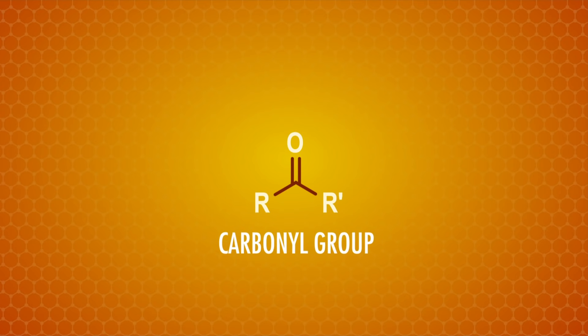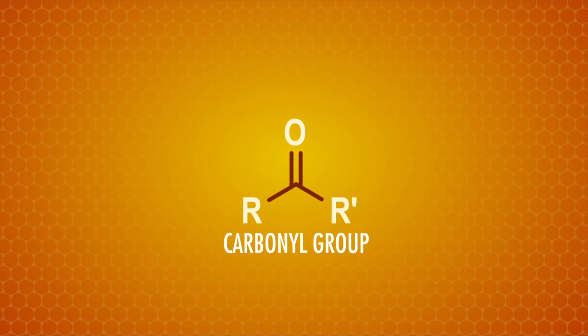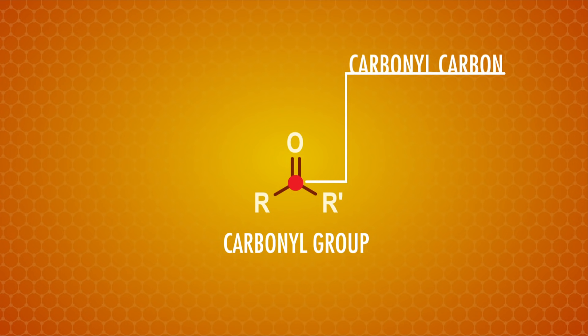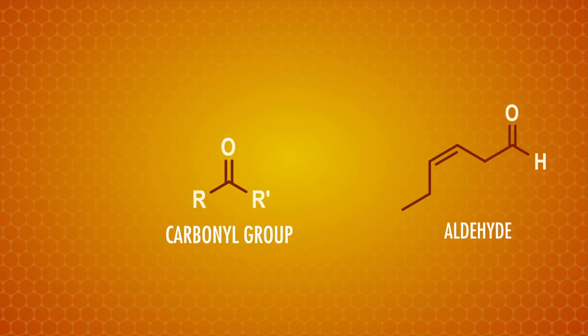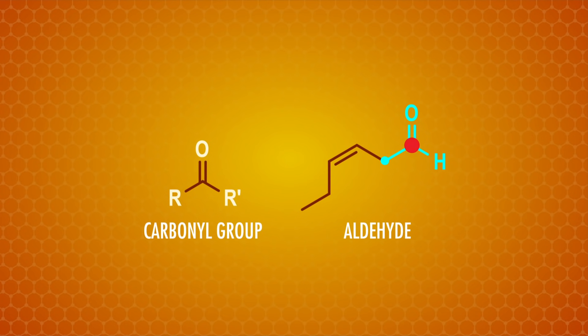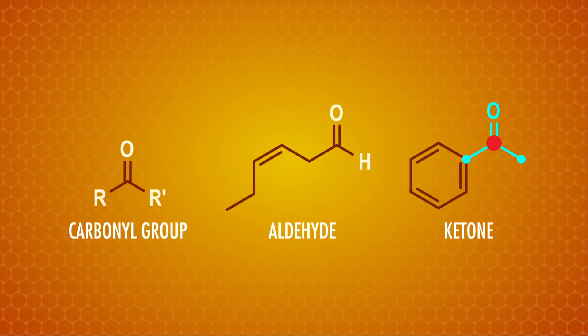Quite a bit of this episode is going to summarize chemistry we've covered before, but with more detail. If you're diving in here, or it's just been a while, you may want to check out some previous episodes as a refresher. We're going to be dealing with a lot of carbonyls — a carbon attached to an oxygen with a double bond. The central carbon in this group is called the carbonyl carbon. When it's at the end of a chain, attached to a carbon group and a hydrogen, we're dealing with an aldehyde. Or when the carbonyl carbon is attached to two carbon groups, it's a ketone.